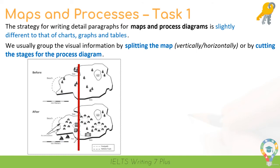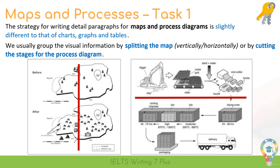For process diagrams, we simply group or split the different stages. Here is a process diagram for how bricks are made — beginning with a digger and ending with the delivery of bricks. Count how many stages and split them into two groups. Group A covers the first four stages: the digger, the metal grid and roller, adding sand and water, and making bricks from the wire cutter or mould. Group B covers everything after that — from the ovens to the packaging to the delivery. The grouping is quite different for maps and processes, but fairly easy to do.